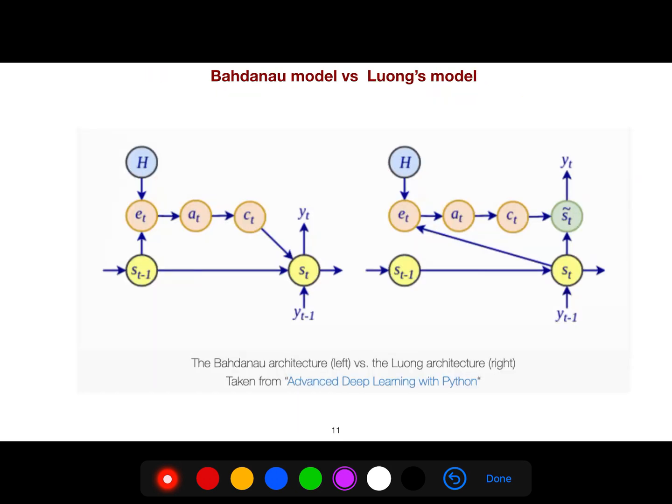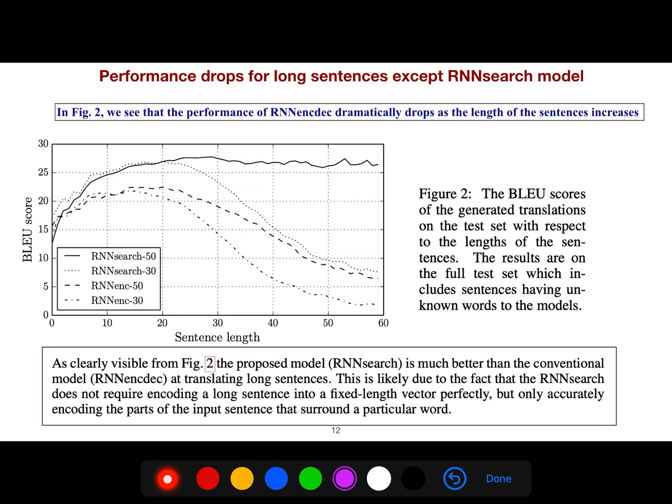So this is the beautiful picture. Bahdanau architecture is here, and the Luong architecture is here. So you can judge which one is more beautiful. But what should we understand from these things? We see that performance drops for long sentences. It cannot capture all of these things because you have lots of hidden layers and it becomes very complicated. But we see that the RNN search method proposed in this paper is much better than conventional methods.